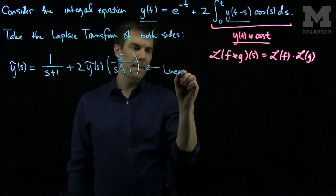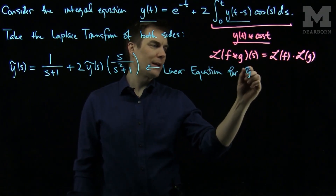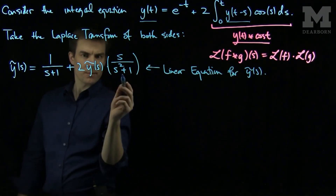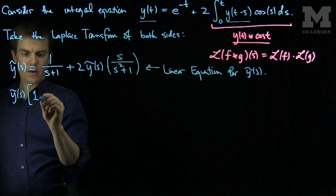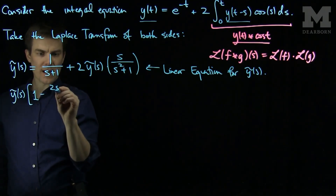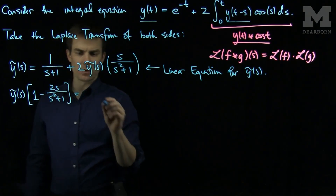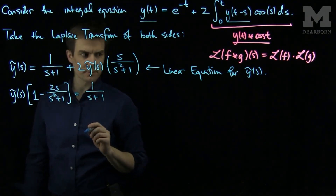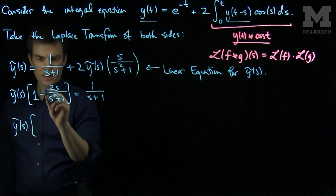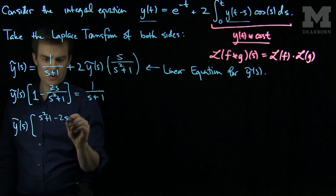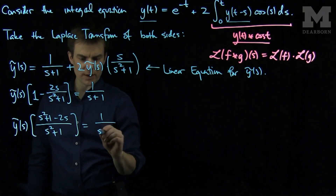Now we have a linear equation for y-tilde of s. We'll solve this linear equation by subtracting the convolution term to both sides. So I'll have y-tilde of s times 1 minus 2s over s squared plus 1, equal to 1 over s plus 1.